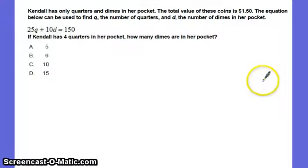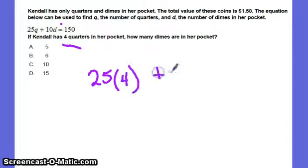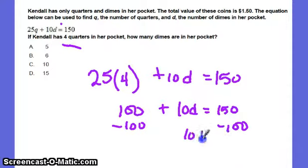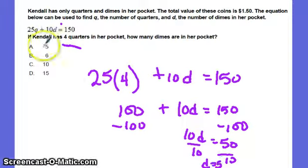Next one. Kendall has only quarters and dimes in her pocket. The total value of these coins is $1.50. The equation below can be used to find q, the number of quarters, and d, the number of dimes in her pocket. So solve this if she's got 4 quarters in her pocket. So 25 times 4 plus 10 times d equals 150. So subtract 100 from both sides. We get 10d is equal to 50. Divide by 10, d is equal to 5.